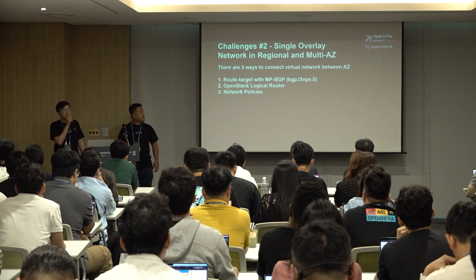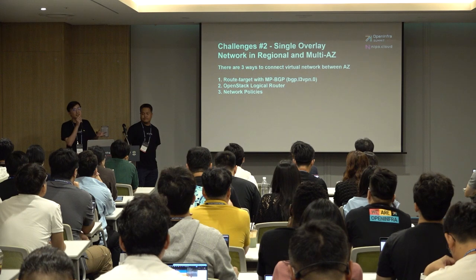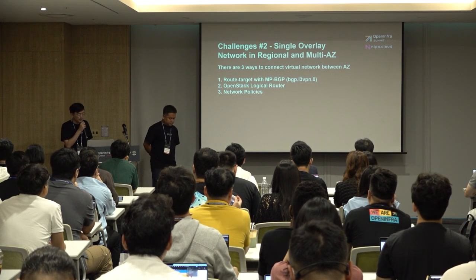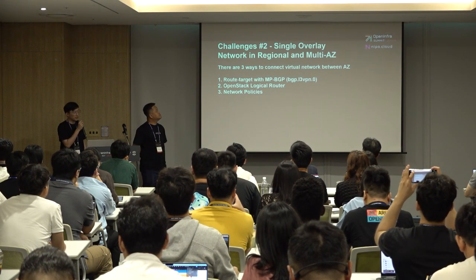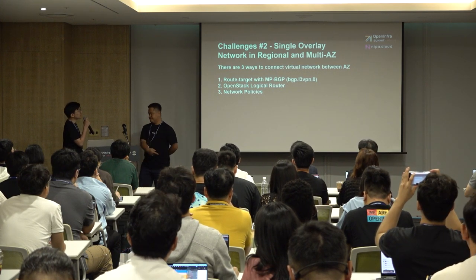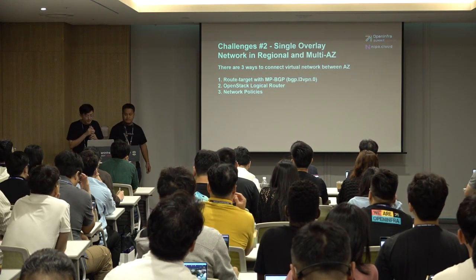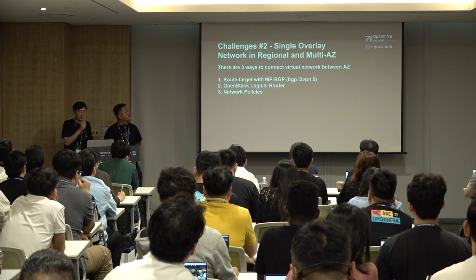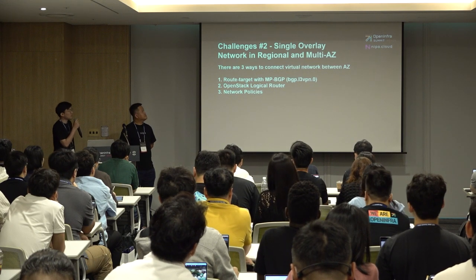The previous challenge addressed public IP failover — when one AZ goes down it automatically reloads to another AZ. Challenge 2 is about a single overlay network in a multi-AZ environment. There are three ways to connect virtual networks between AZs. This is all about private IP connectivity. Option one is route targets with multi-protocol BGP. Option two is the OpenStack logical router. Option three is network policies.